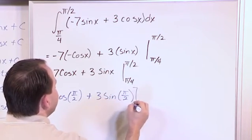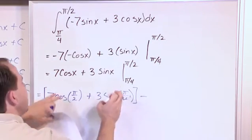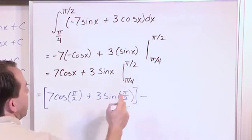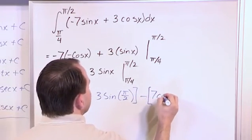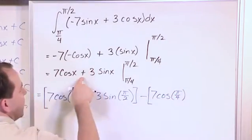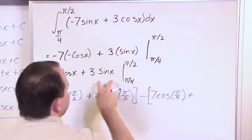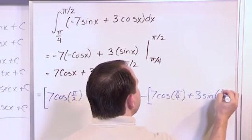And if you make a mistake, which you will eventually, then you know what you've done wrong. So this is evaluating the function at the top limit of integration. Now we're going to evaluate the function at the bottom limit: 7cos(π/4) plus 3sin(π/4).